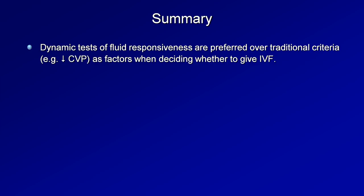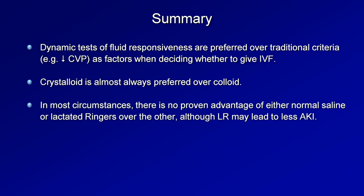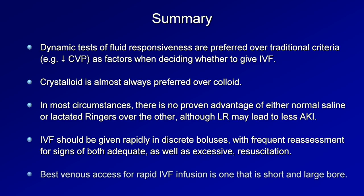So we're almost at the end. To summarize: dynamic tests of fluid responsiveness are preferred over traditional criteria such as low CVP when deciding whether to give IV fluids. Crystalloid is almost always preferred over colloid. In most circumstances, there is no proven advantage of either normal saline or LR over the other, although LR may lead to less AKI. IV fluids should be given rapidly in discrete boluses with frequent reassessment for signs of both adequate as well as excessive resuscitation. The best venous axis for rapid IV fluid infusion is one that is short and large bore, such as an introducer or, as a close second choice, a large 14 or 16 gauge peripheral IV.